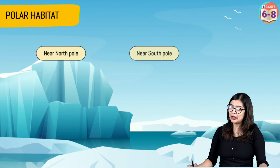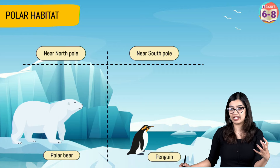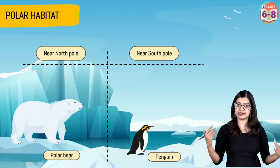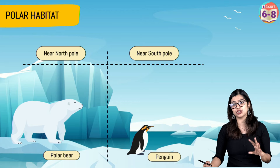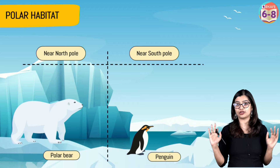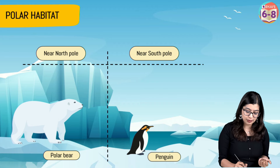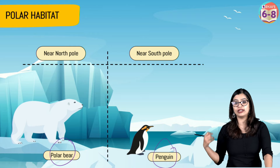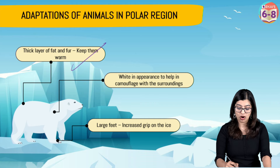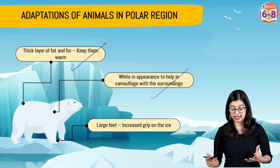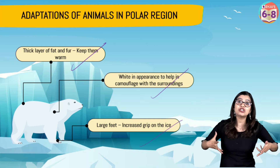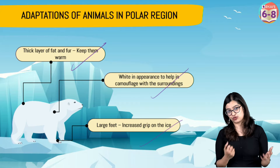Moving on to polar regions — the North Pole and South Pole — where extreme temperatures persist and regions are covered in snow throughout the year. In the Northern Pole we find polar bears, and in the Southern Pole we find penguins. Polar bears have a thick layer of fat that keeps them warm, whitish fur that helps them camouflage in the snow, and large feet that give them grip on ice. All these adaptations help them survive in these extreme conditions.